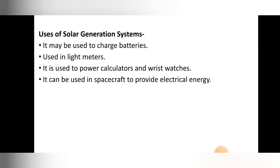The uses of the solar generation system: first, it may be used to charge batteries. Second, used in light meters. Third, it is used to power calculators and wrist watches. Fourth, it can be used in spacecraft to provide electrical energy — in spacecraft, sunlight is used and electrical energy is produced through the photovoltaic effect.